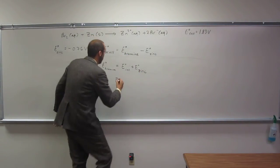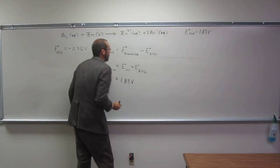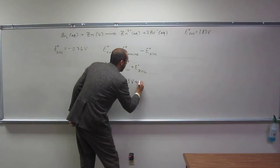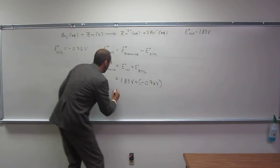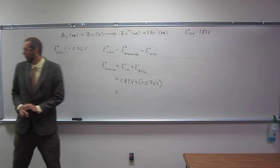So E bromine is going to be E cell, 1.83 volts, plus E zinc, negative 0.76 volts, and 1.07.